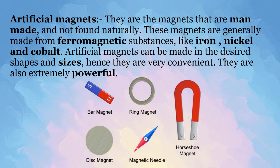Artificial magnets are the magnets that are man-made and not found naturally. These magnets are generally made of ferromagnetic substances like iron, nickel and cobalt. Artificial magnets can be made into the desired shapes and sizes. Hence, they are very convenient and also extremely powerful. These magnets do not necessarily have to be made of iron, nickel and cobalt — they can also be made of their alloys.